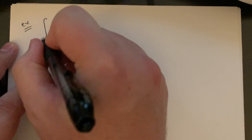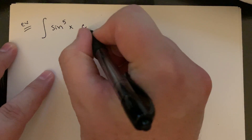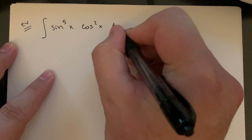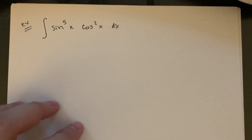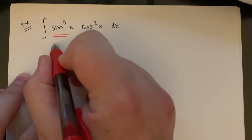What if it's the sine power that's odd instead of the cosine? The idea is essentially the exact same steps and process — we're just flipping the role of sine and cosine. So consider the integral of sine to the fifth of x times cosine squared of x dx. We look for the odd power — that's the sine to the fifth.